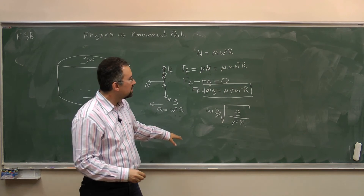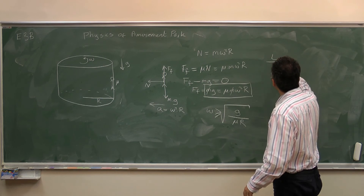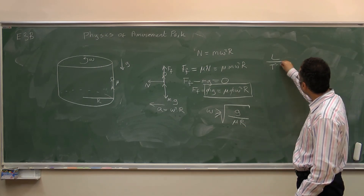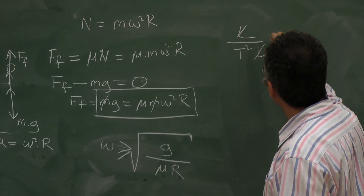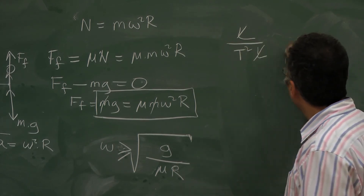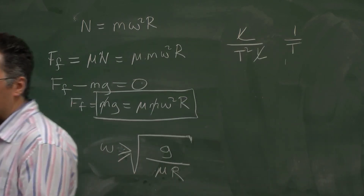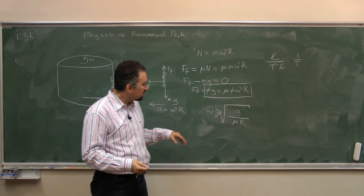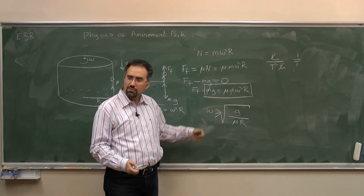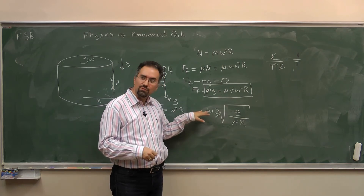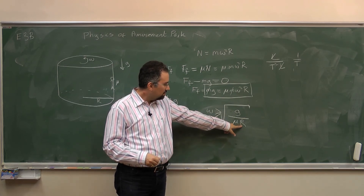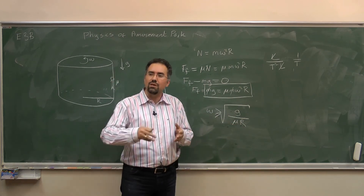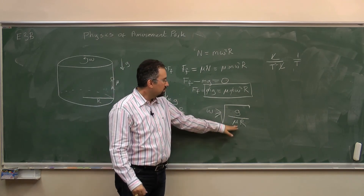Checking units: g is acceleration — length per time squared. Mu is dimensionless. r is a length. So inside the square root we get 1 over time squared, and taking the square root gives 1 over time, which is a frequency — radians per second. Units check out. Does it make physical sense? More gravity means you need to turn faster — makes sense. Larger radius means less omega needed, because the centripetal force omega squared r increases with r. Less friction means you need more omega — if there's no friction, no rotation speed will save you.